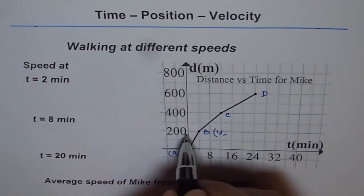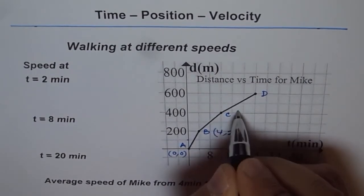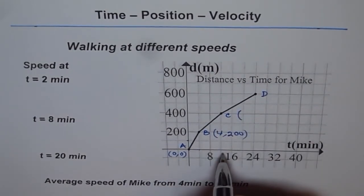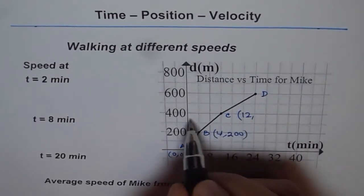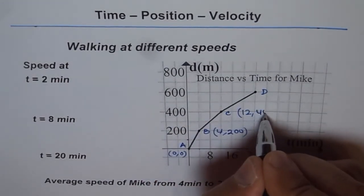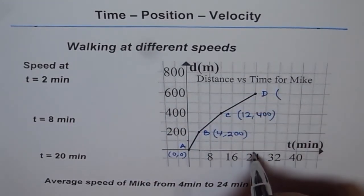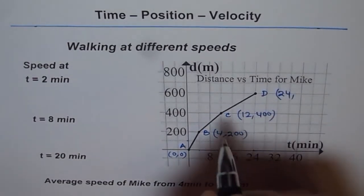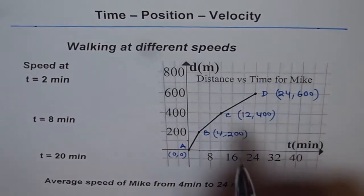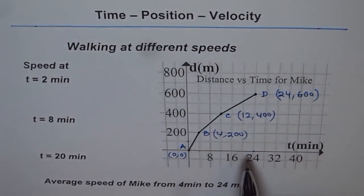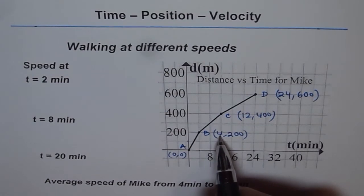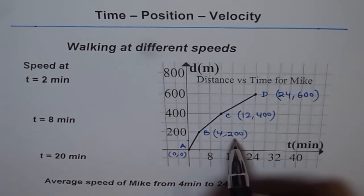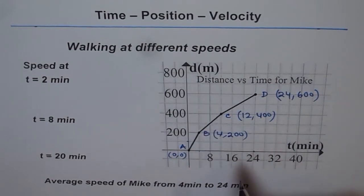C is at time 12 minutes and distance 400 meters, so C is (12, 400). D is at time 24 minutes and distance 600 meters, so D is (24, 600). From a distance versus time graph we can straight away find position, where the first coordinate is time and the second is distance.